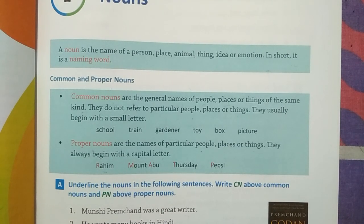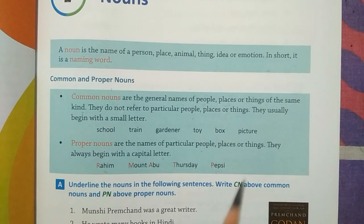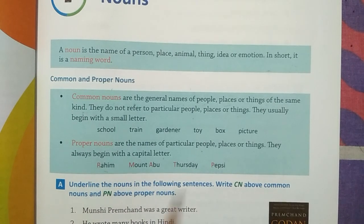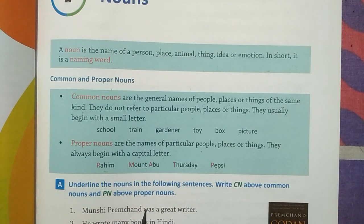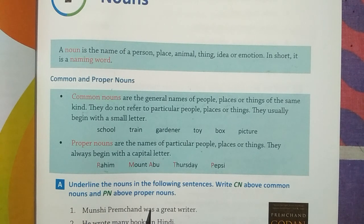So students, when you are taking a particular name of any person, place, animal, things, either school, building or roads — these are called proper nouns. And when you are not indicating any particular noun, these are common nouns.